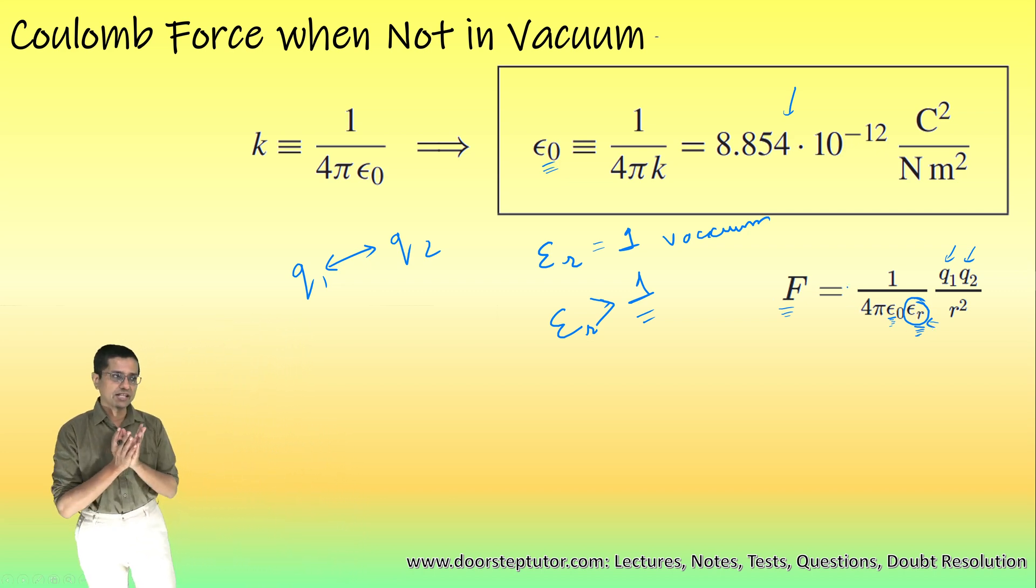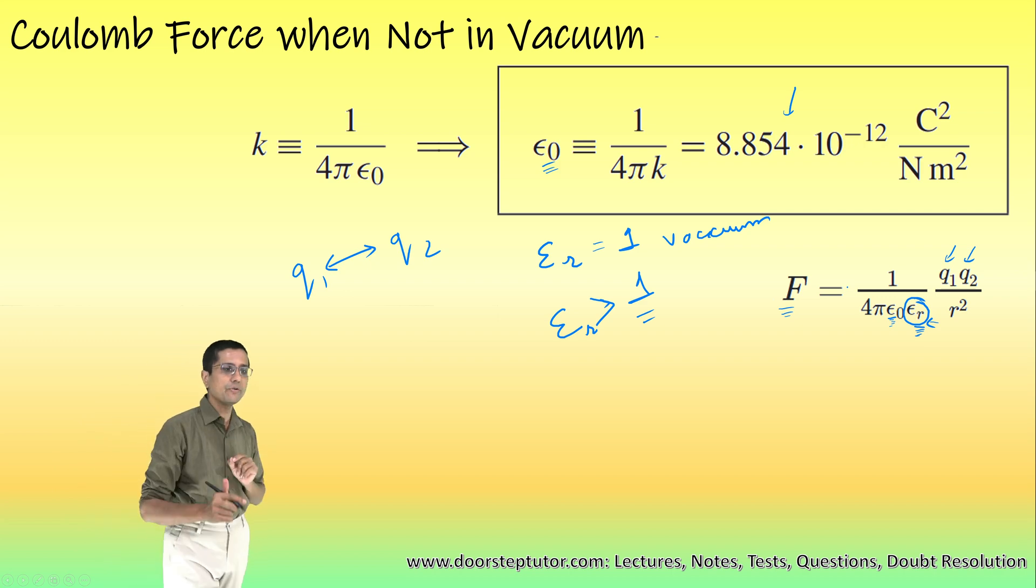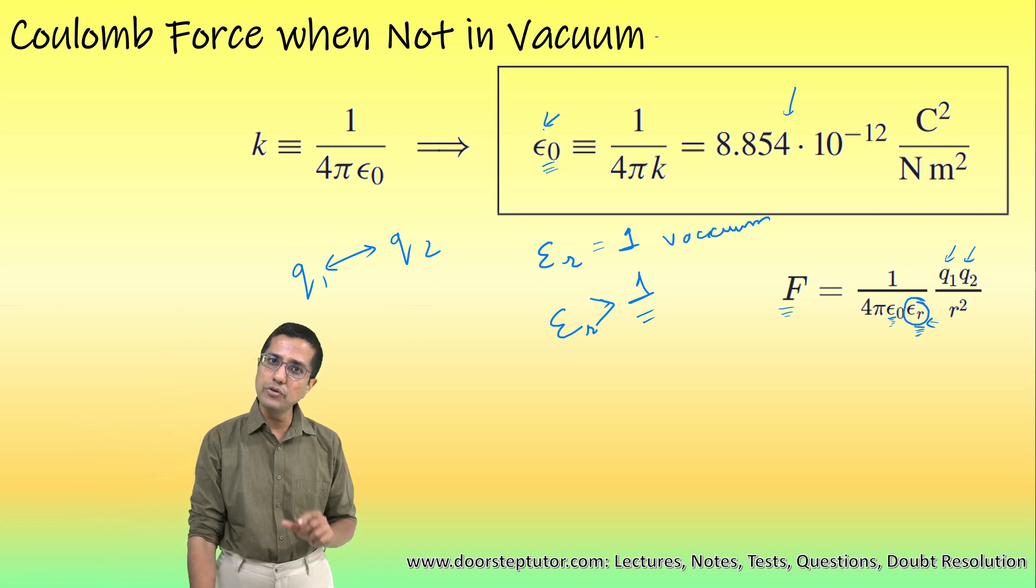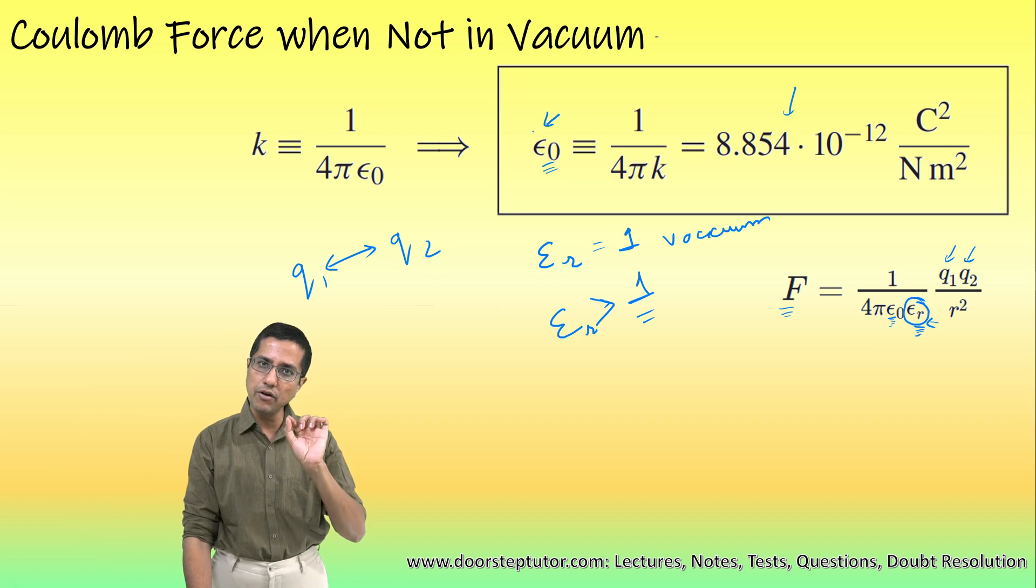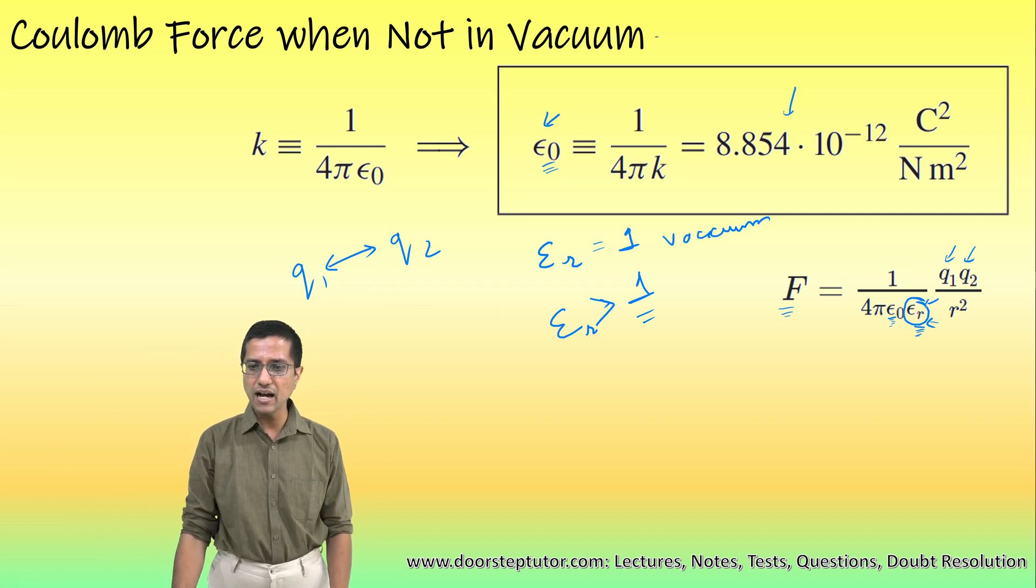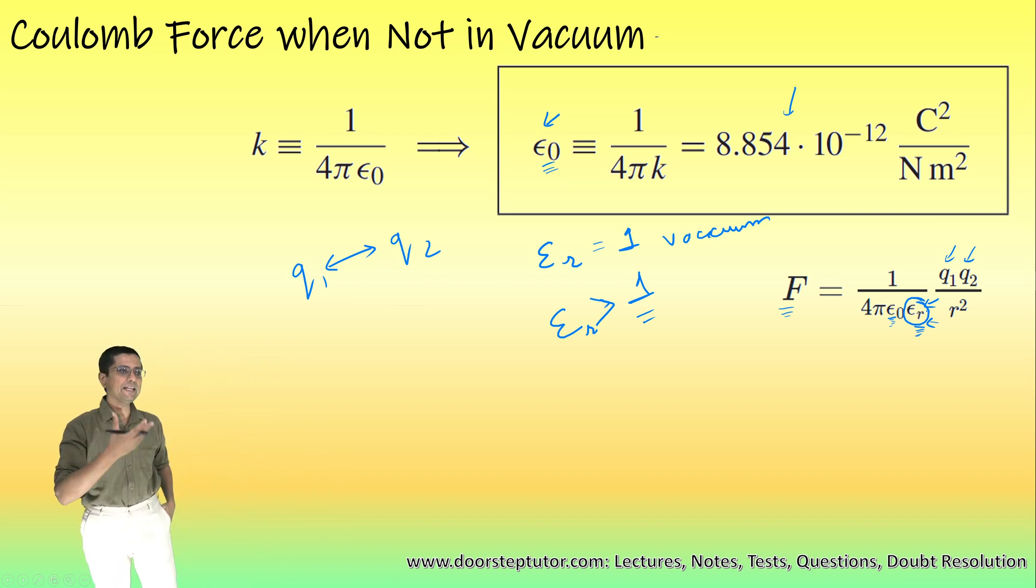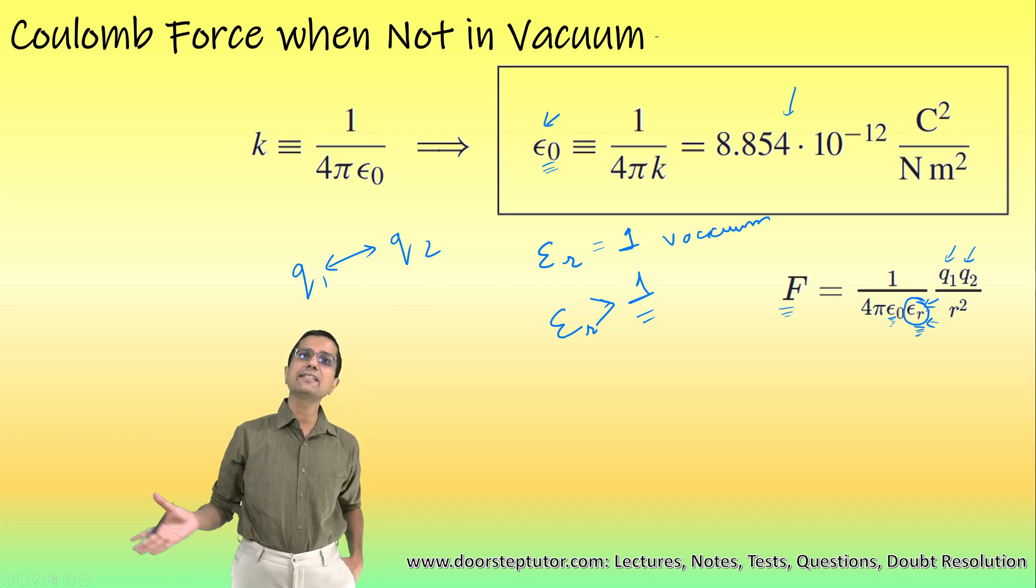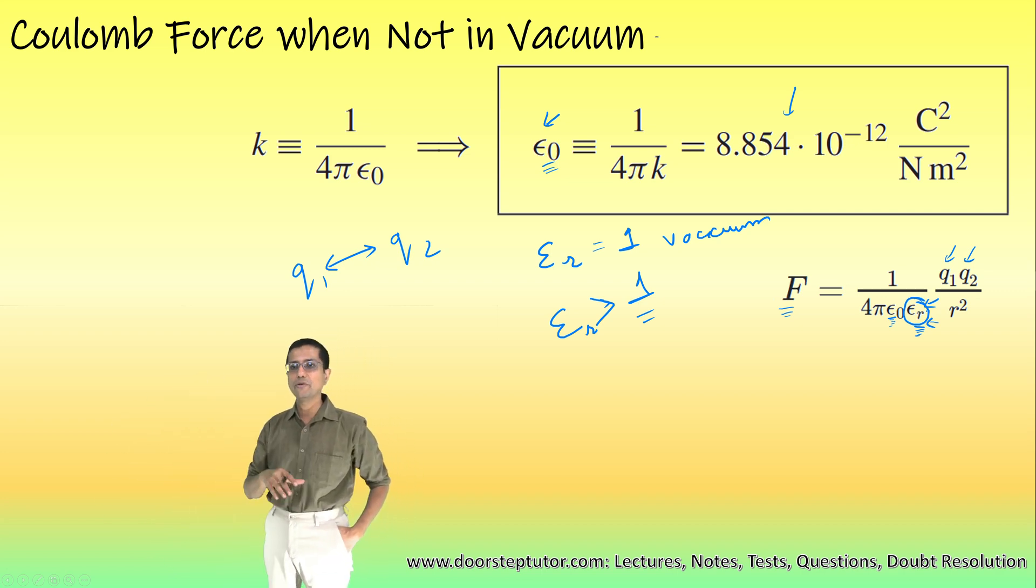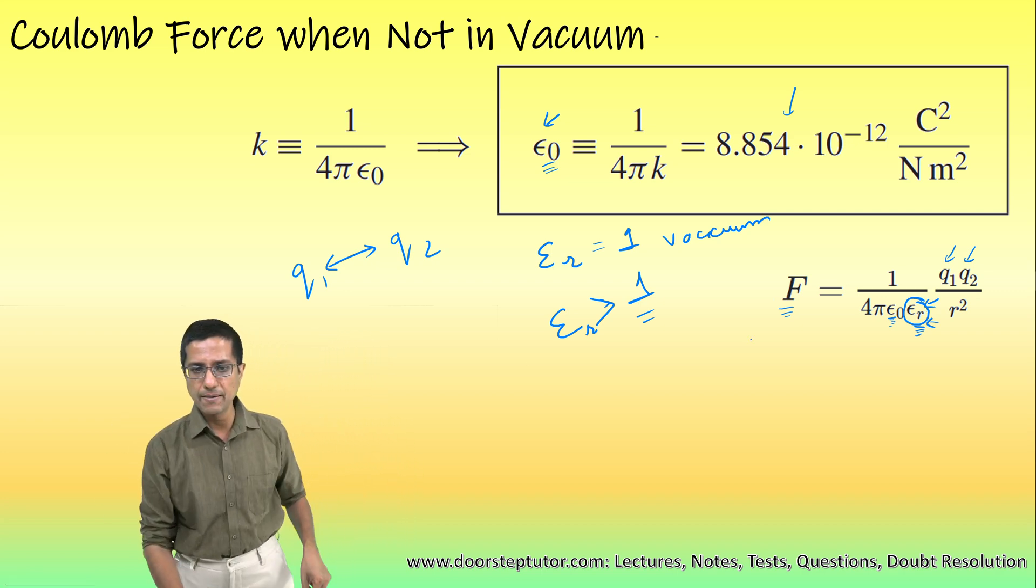So these are the two terms. Epsilon 0 is the absolute permittivity of free space or vacuum, and epsilon r is the relative permittivity—how much is the medium allowing the Coulomb force to pass as compared to the vacuum. That is what is denoted by epsilon r.